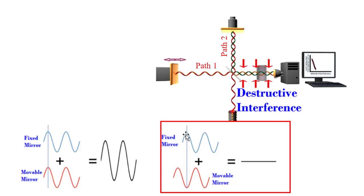This is the reflected signal from the fixed mirror, and this is the reflected signal from the movable mirror. From peak to peak, this distance is lambda. Now the mirror has moved half of lambda, and ultimately there will be a 180-degree phase difference between the two signals. So when they recombine, we will get a signal with the least intensity — normally zero. So at that time, we will get zero output at the detector.